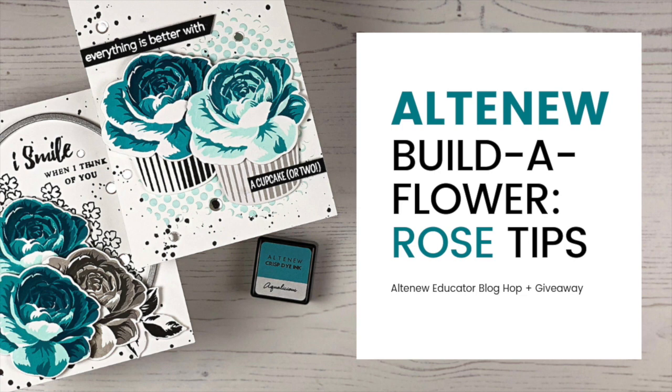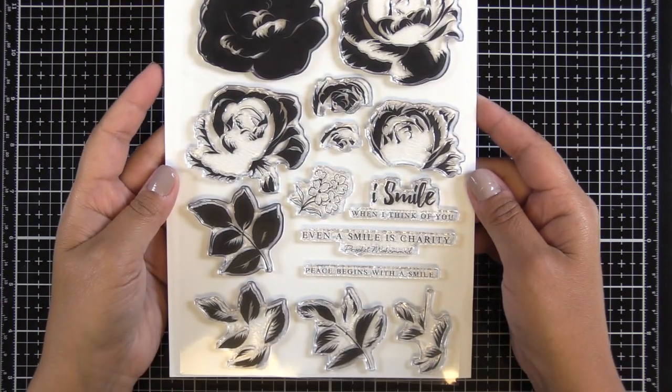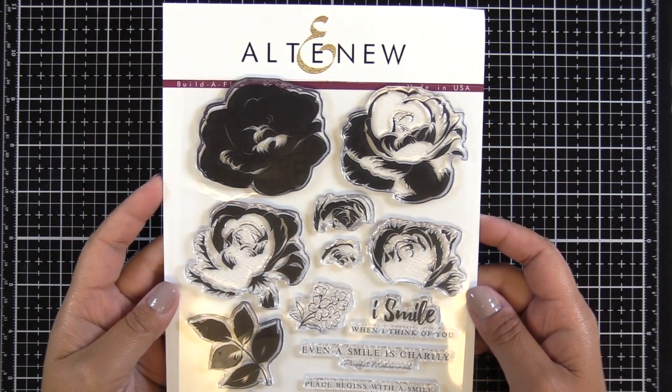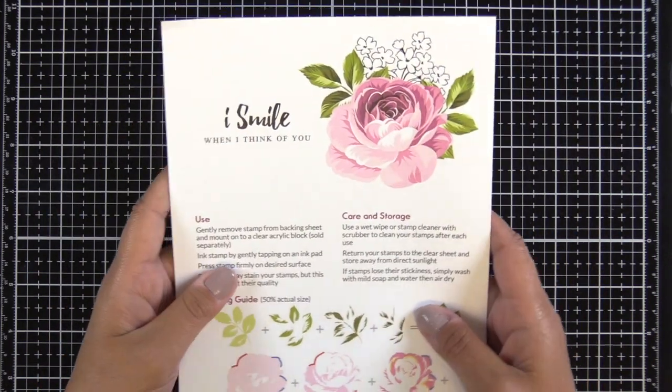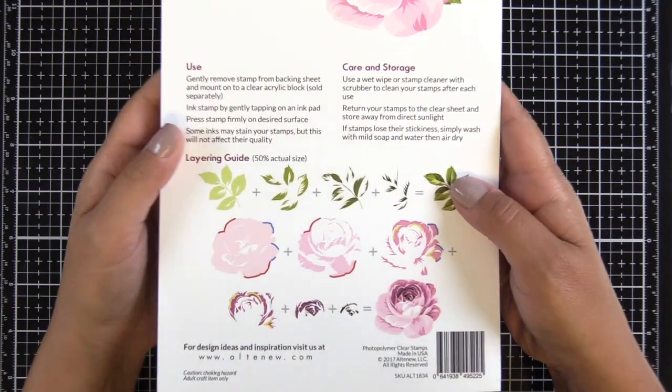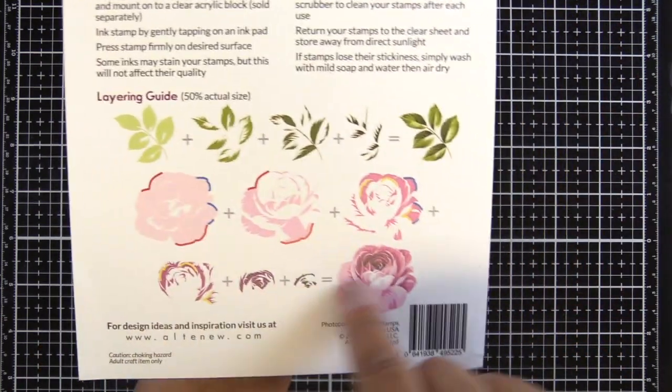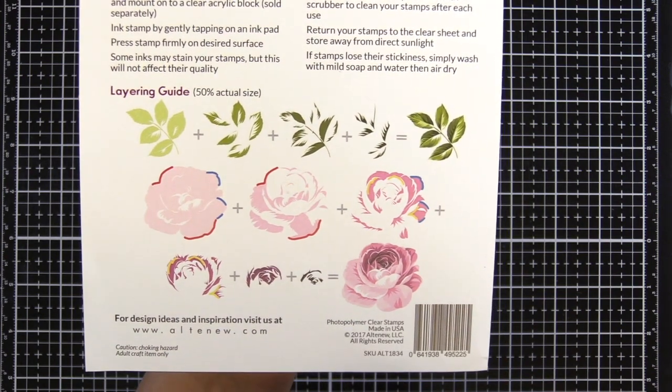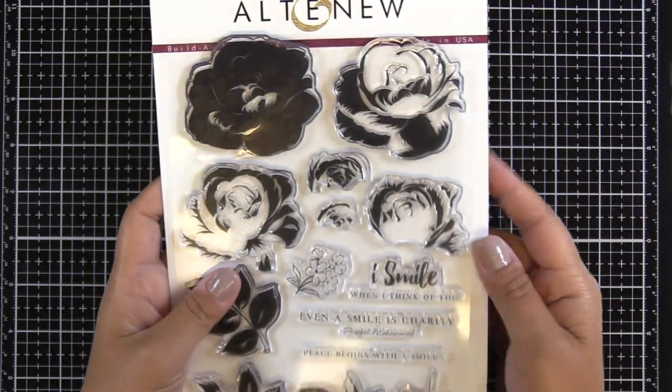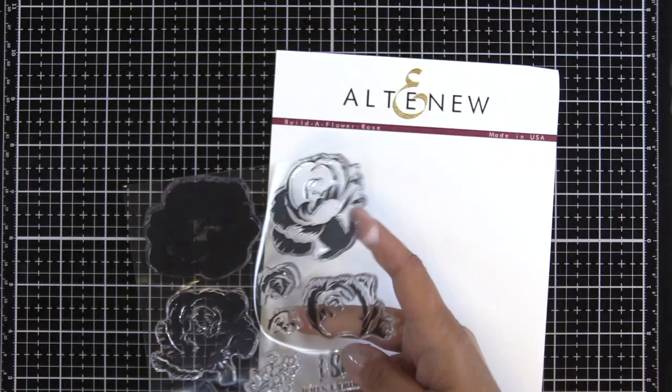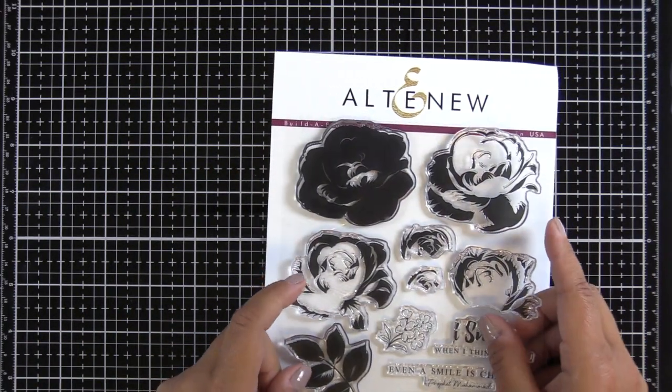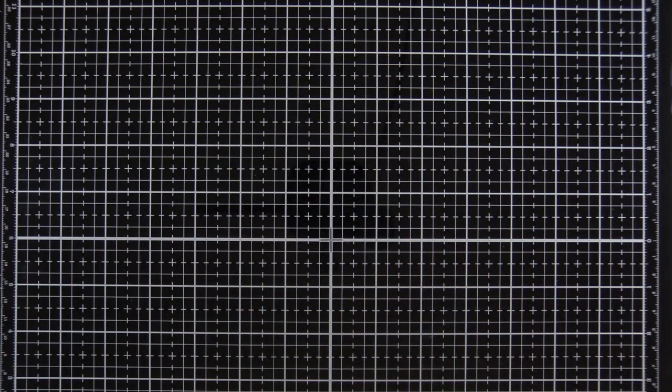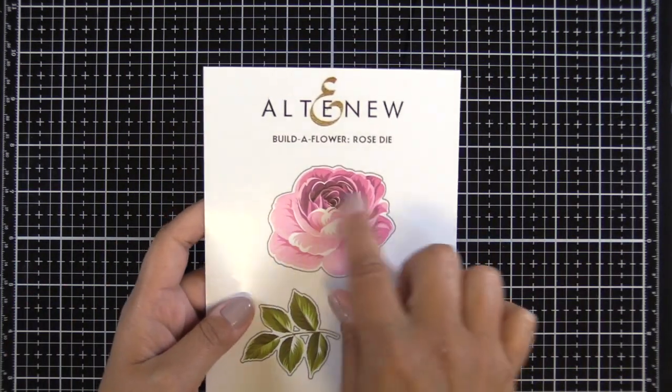Let's get started. This six by eight stamp set was released before Altenew started providing the six by eight trifolds with all the information on the inside. You have the layering guide on the back of the packaging, but lots of people have questions about those two little pieces in the middle. One of the things I recommend is to cut out those sample cards, put that in your MISTI, and use that as a template for your stamping. Since we don't have that trifold, the next best thing is to use your die.